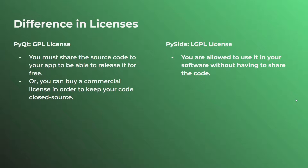PyQt uses the GPL license and PySide is licensed under the LGPL license. With the GPL license, you must share the source code with your users in order to release the app for free. You can't distribute an app built with PyQt as paid software without sharing the source code. For some people this isn't a deal breaker — they don't mind releasing the source code and can still sell the app. However, if you want to keep your code closed source, you would need to buy a commercial license and pay to use PyQt in a commercial setting.